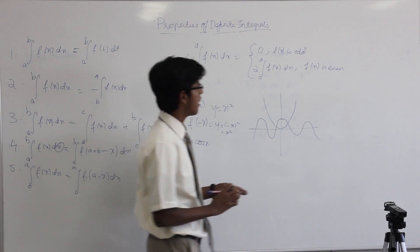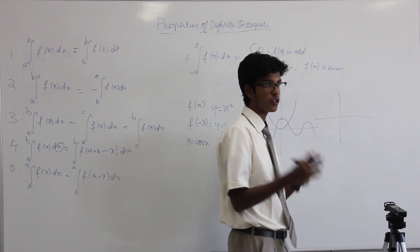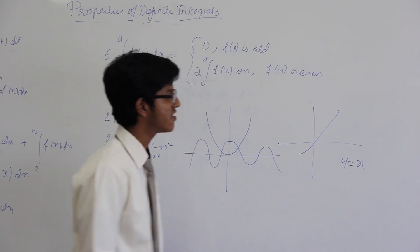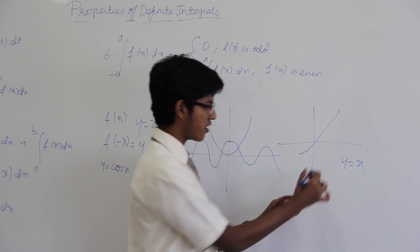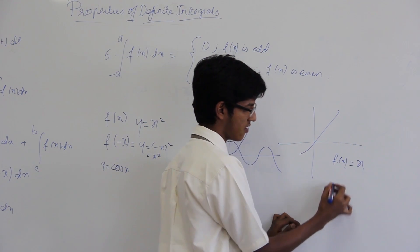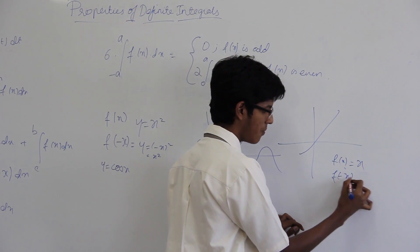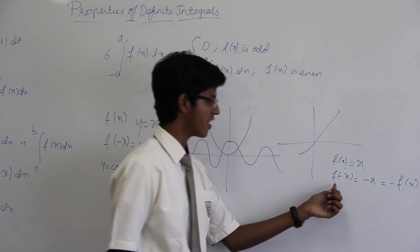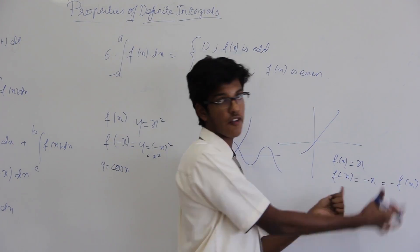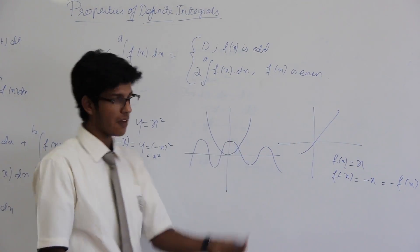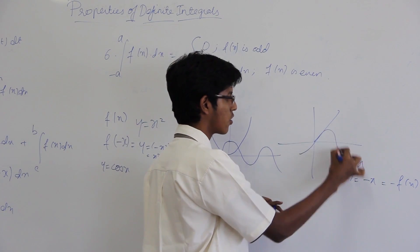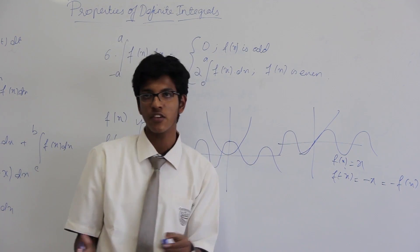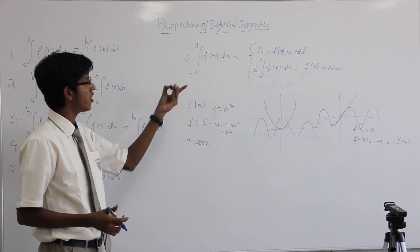Odd functions are when the graph is symmetric with respect to the origin, not the y-axis. For example, y equals x is an odd function. If f of x equals x, then f of minus x equals minus x, which equals minus of f of x. When f of minus x equals minus of f of x, it is an odd function. Another example is y equals sin x — sin of minus x equals minus sin x. So that is the difference between odd and even functions.